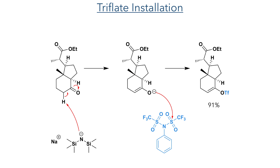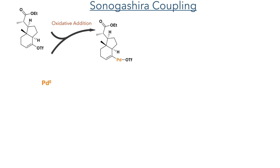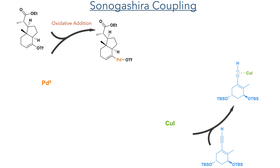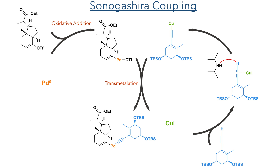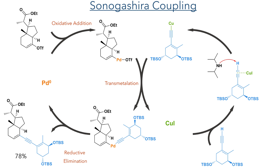With the carbon framework of the C and D rings now complete, they then installed the triflate necessary for the Sonogashira coupling. The alpha position was deprotonated using sodium HMDS and the enolate was triflated using N-phenyl bis-trifluoromethane sulfonamide. The two fragments were then coupled using a Sonogashira reaction: palladium(0) undergoes oxidative addition into the carbon-triflate bond of the C and D fragment, while copper iodide coordinates to the alkyne of the A fragment and is deprotonated by diisopropylamine to form a copper alkyne complex. This undergoes transmetallation with the palladium triflate, and the resulting intermediate undergoes reductive elimination to produce the product in a 78% yield.